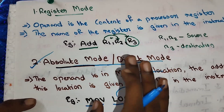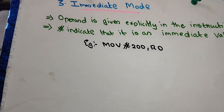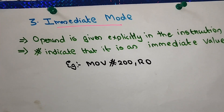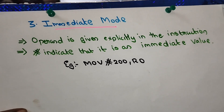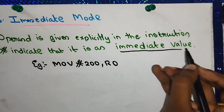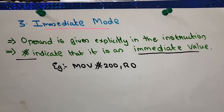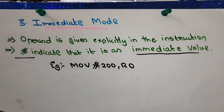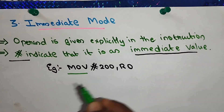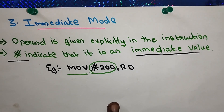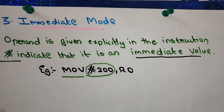The next addressing mode is immediate addressing mode. In immediate mode, the operand value is given explicitly in the instruction. An immediate value is indicated by a hash sign (#). For example: MOVE #200, R0. The hash sign indicates an immediate value.